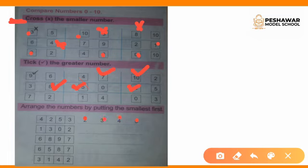In the second block we have 1, 3, 0 and 2. Counting starting from 0, then 1, then 2, then 3. The next question is 6, 8, 9 and 7 — it starts from 6, then 7, then 8 and 9. Like this we will do all the questions.